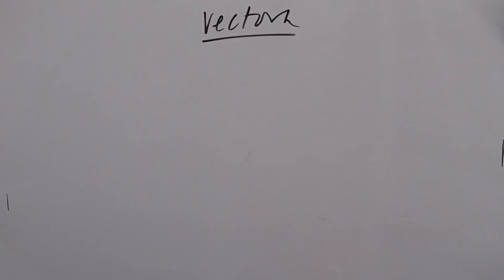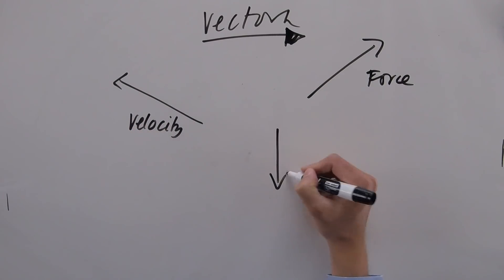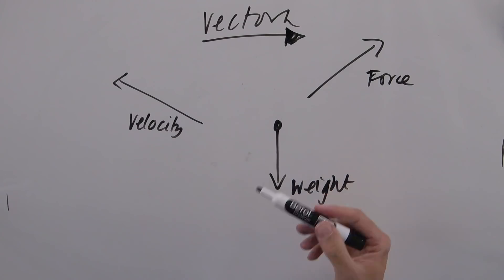You need to know a little bit more about vectors. We can represent vectors as arrows. So this is a vector, say a force. This is a vector. This is a vector of your weight, for example. So what do we know about these?